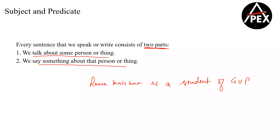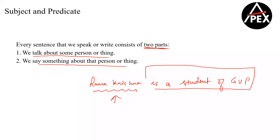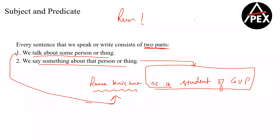In this sentence, whom am I talking about? I am talking about Ramakrishna. And what am I telling about Ramakrishna? I am telling that Ramakrishna is a student of GVP. So this is your first part, and this is your second part. Every sentence should have two parts — so how does 'run' have two parts? Or how does 'help' have two parts? They don't.